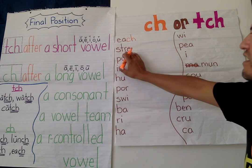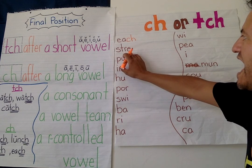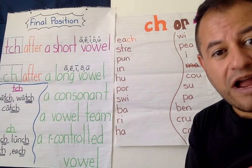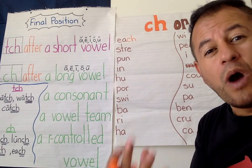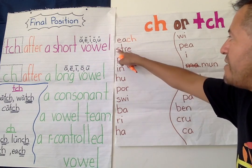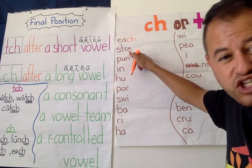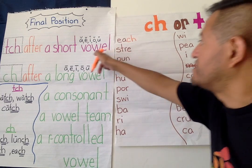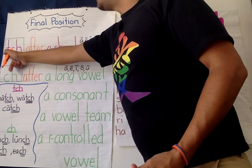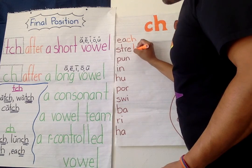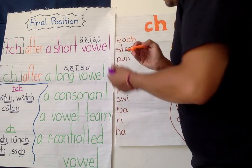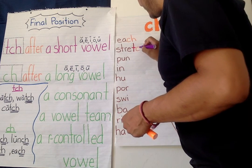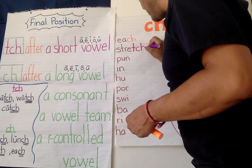"Stretch." STR-EH — stretch. Now I'm going to think: what do I hear? My last letter before the "ch" is a vowel. Is it a short vowel or long vowel? It's a short vowel, so it's going to be "stretch" T-C-H. I'm going to use a different color for that because it'll help us see that it's a different spelling. T-C-H, stretch.